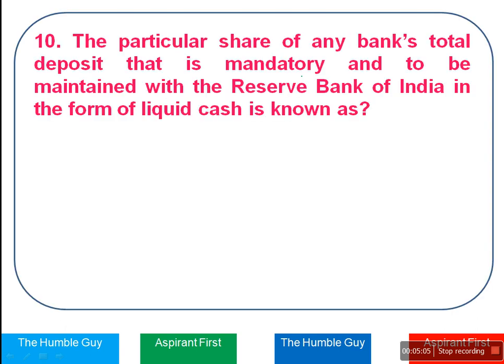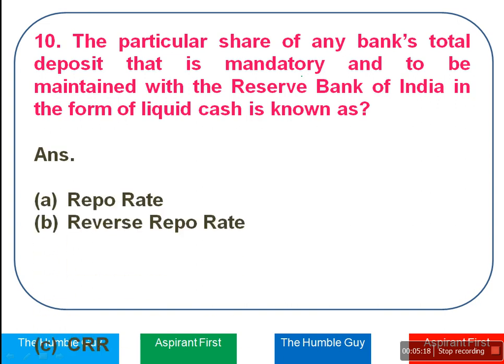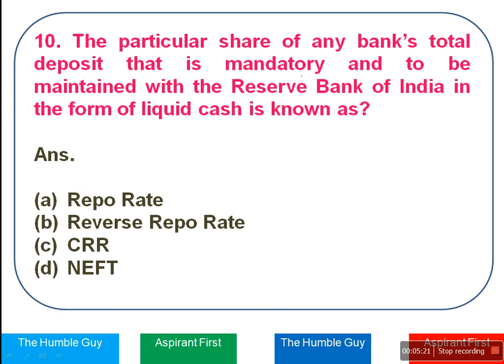Next question: The particular share of any bank's total deposit that is mandatory to be maintained with the Reserve Bank of India in the form of liquid cash is known as what? The options are Repo Rate, Reverse Repo Rate, CRR, or NEFT. The right answer is Option C — CRR, Cash Reserve Ratio.